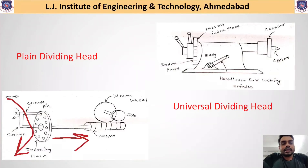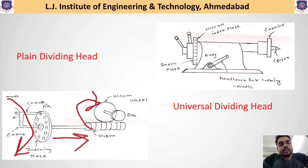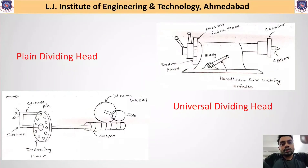When the crank pin is rotated, it rotates the indexing plate. The crank and indexing plate are connected to the worm, so their rotation also rotates the worm. With rotation of the crank, the indexing plate rotates, which rotates the worm, which is connected to the worm wheel. The worm wheel then gives rotation to the job or workpiece.